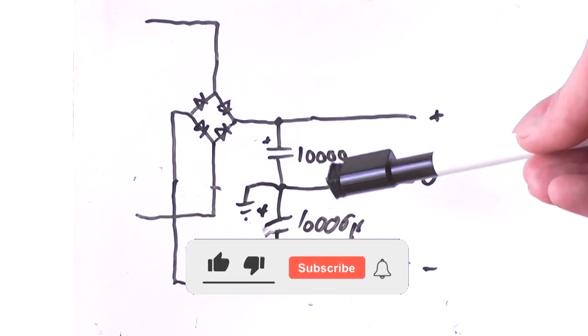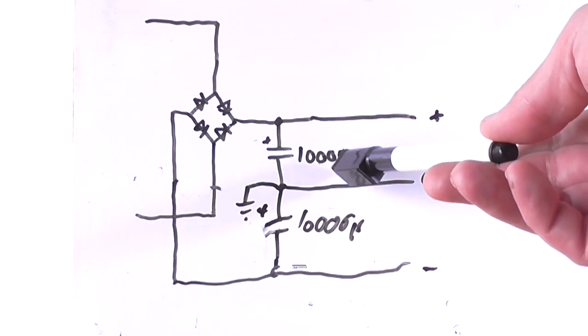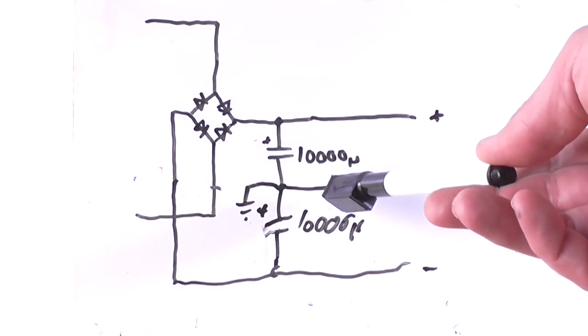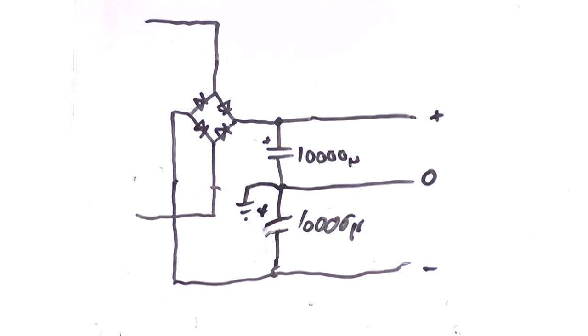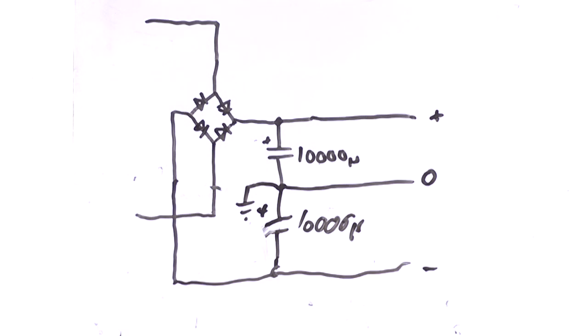But say for example this was a hundred microfarad and this one was 10 microfarad. Well it'll be a hundred times 10 which is a thousand, divided by a hundred plus 10 which is 110, which equals about 9.8 microfarad in the end. It's a little less than 10. So it will always take the total value as lower than the lowest capacitance in the stream.